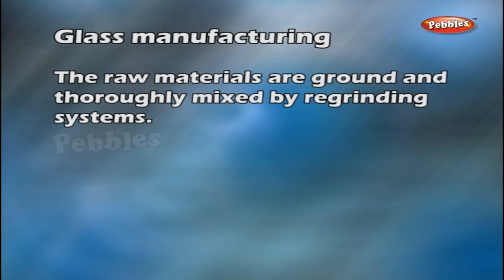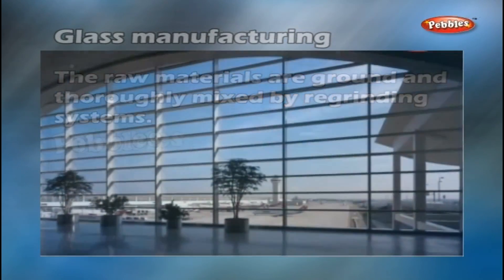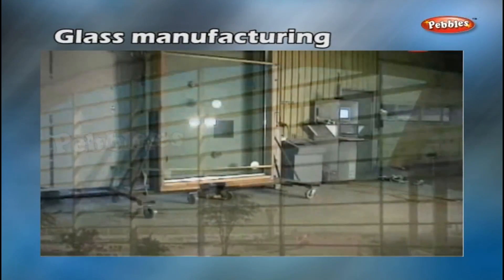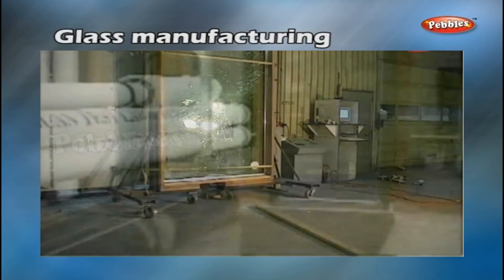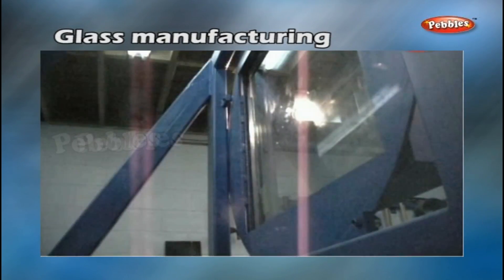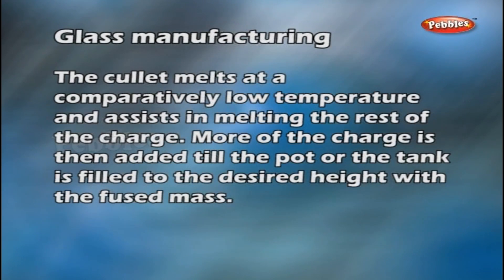Manufacture of Glass. The raw materials are ground and thoroughly mixed by re-grinding systems. The homogeneous mixture known as batch is shoveled into the pot of a furnace or tank of the tank furnace, along with some broken glass called cullet. The cullet melts at a comparatively low temperature and assists in melting the rest of the charge.